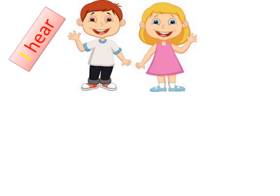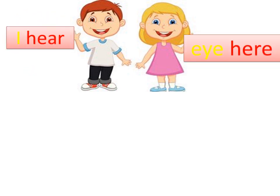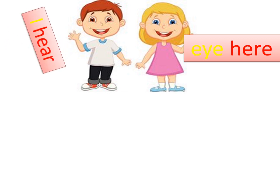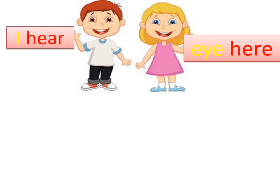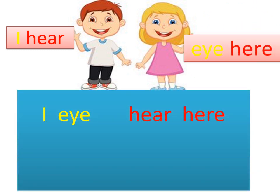Rohan says 'I hear' and Rhea says 'I hear.' When they are saying these words, they are both really confused. Can you tell me why are they confused with Rohan's 'I' and 'hear' and Rhea's 'eye' and 'here'? They are confused because Rohan's 'I' and Rhea's 'eye' sound the same — dono ki awaz same aa rahi hai na? And Rohan's 'hear' H-E-A-R and Rhea's 'here' H-E-R-E also sound the same. But what is different?